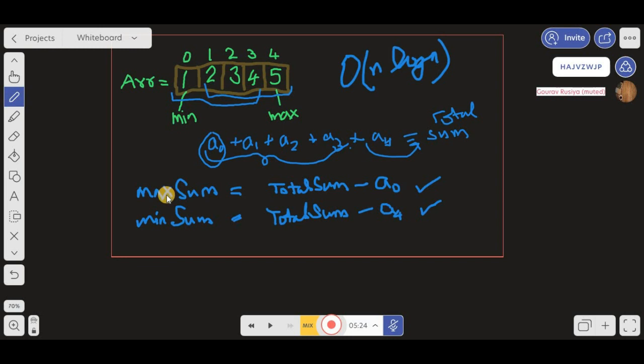From this we have derived that maximum sum equals total sum minus a0 and minimum sum equals total sum minus a4. But this formula will only be helpful when the array is sorted. If the array is unsorted and you perform a sorting on all those elements, then you can use this formula. But if you perform sorting, the time complexity will be O(n log n).